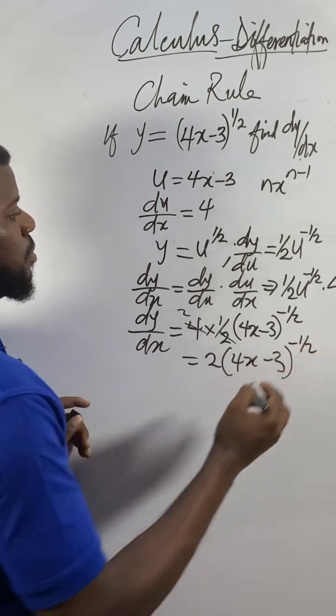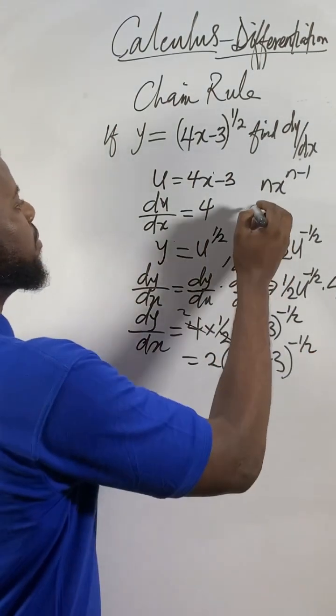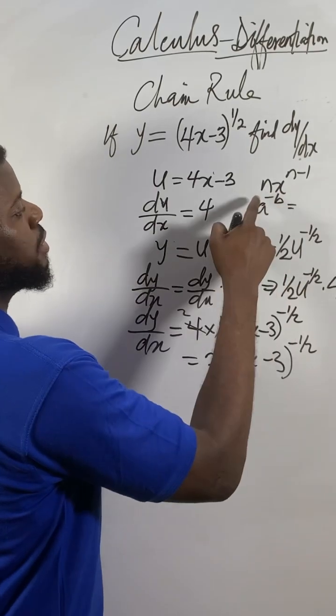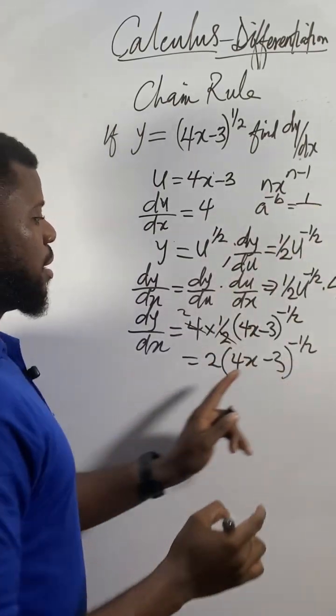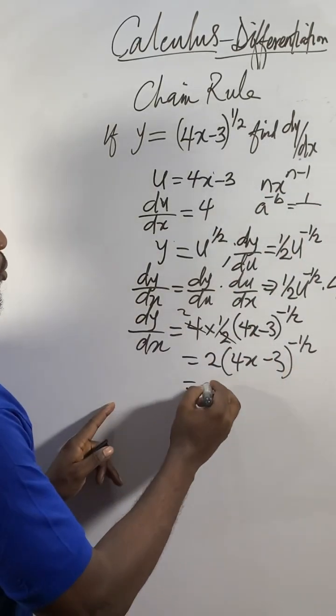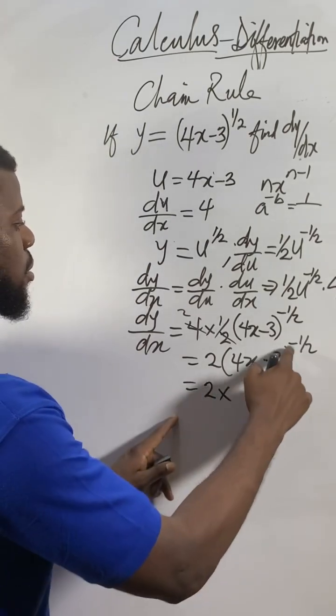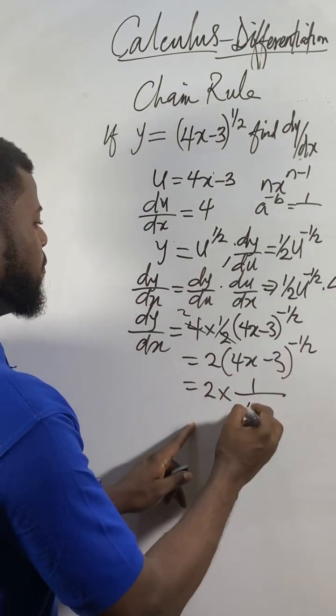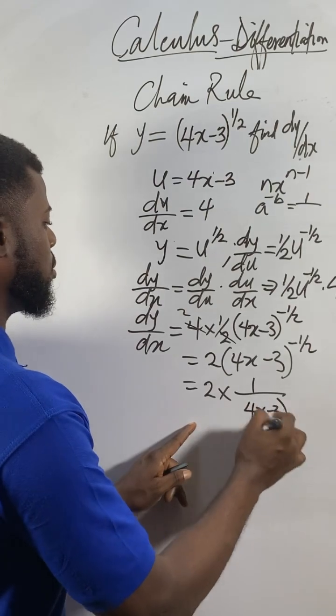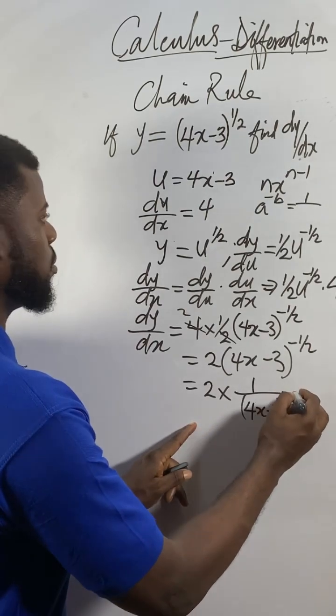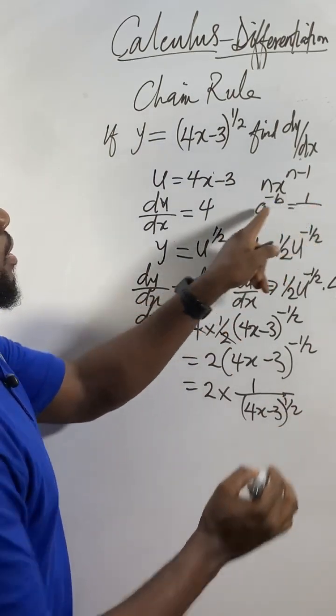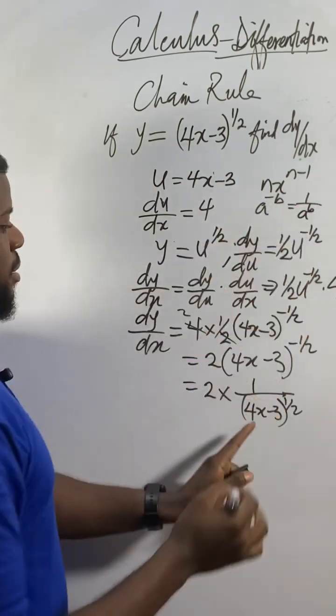According to the negative index rule, if you get a^(-b), the negative changes to 1 over. So this becomes 2/(4x - 3)^(1/2).